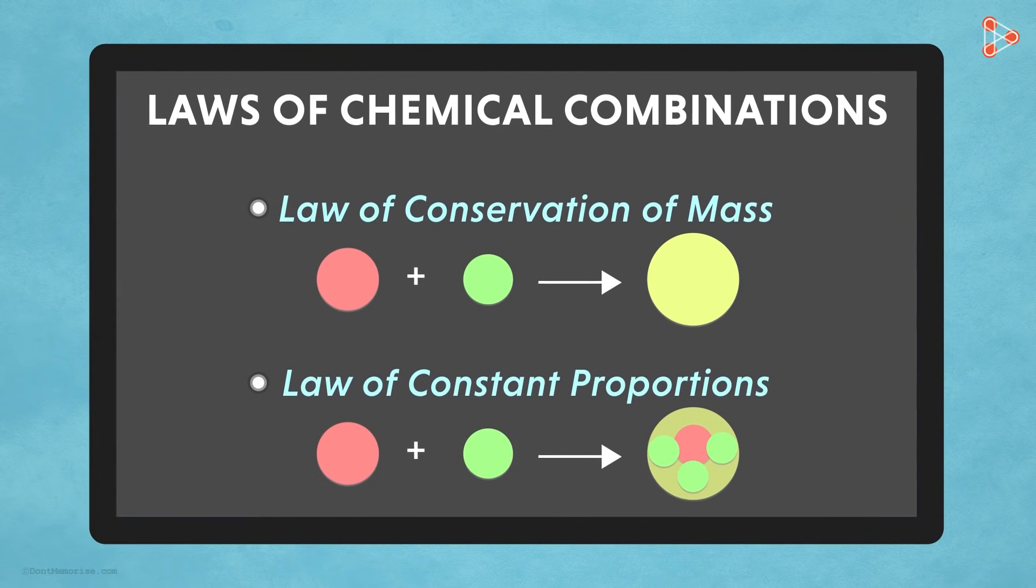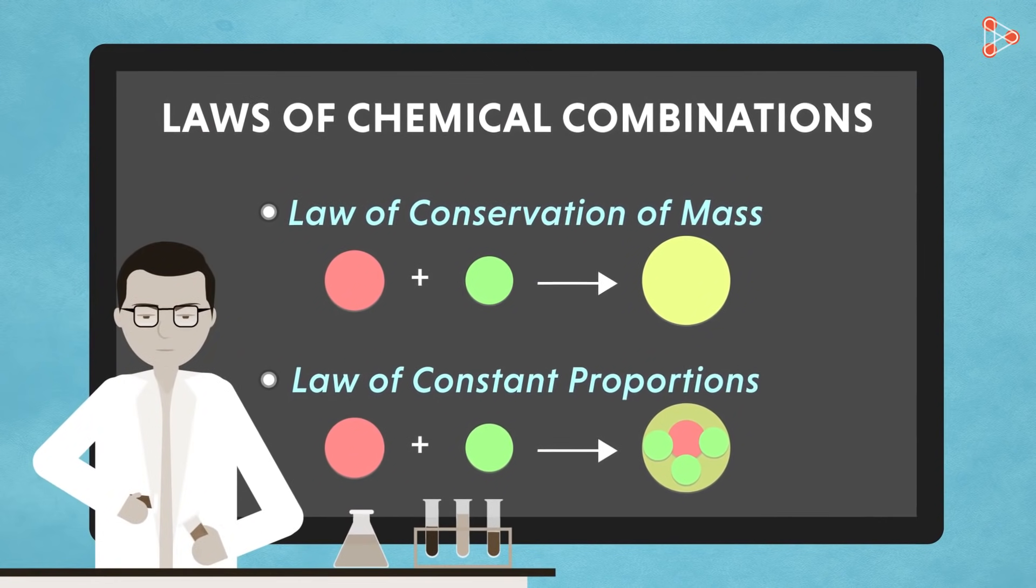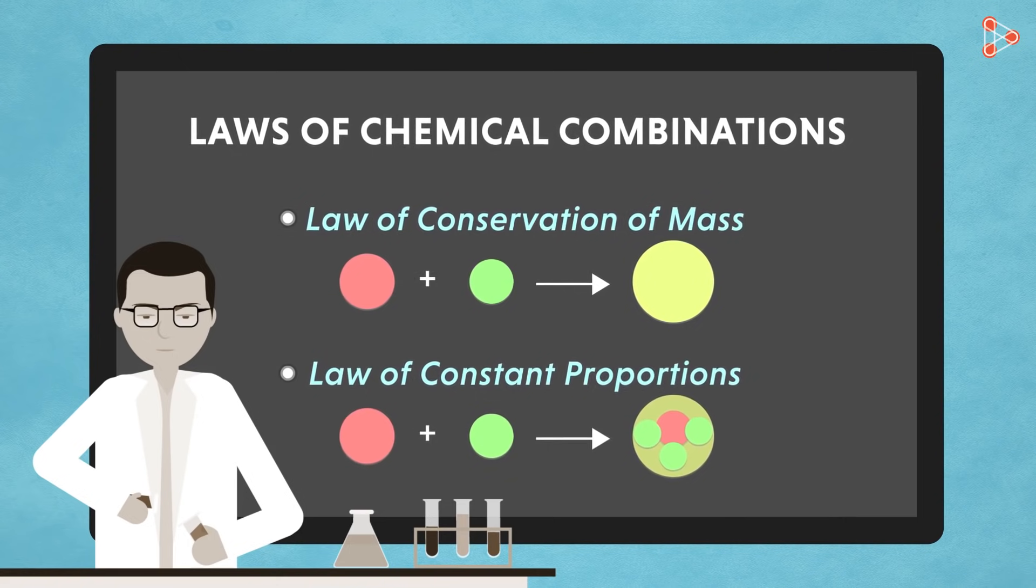The laws of chemical combinations created ripples in the stagnant pool of chemistry. They enabled scientists to carry out various experiments that helped in forming strong foundations in chemistry.